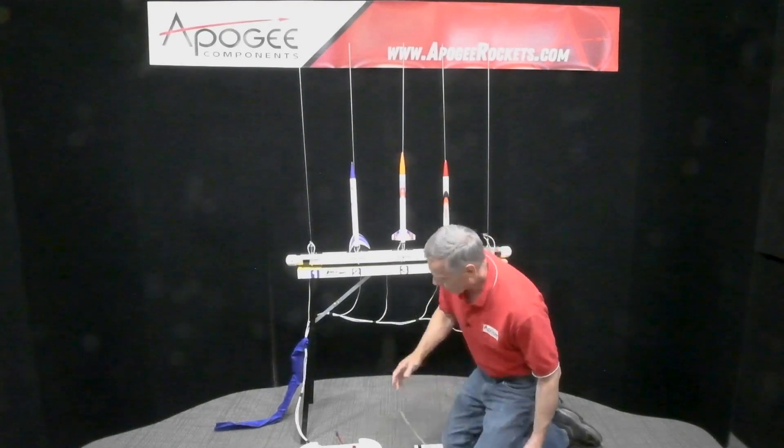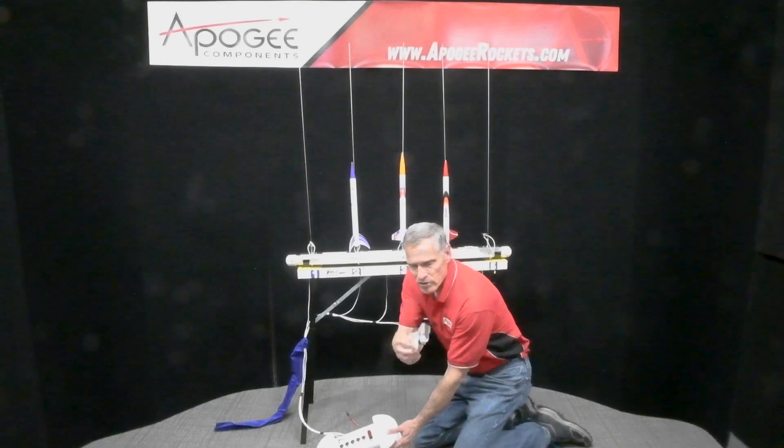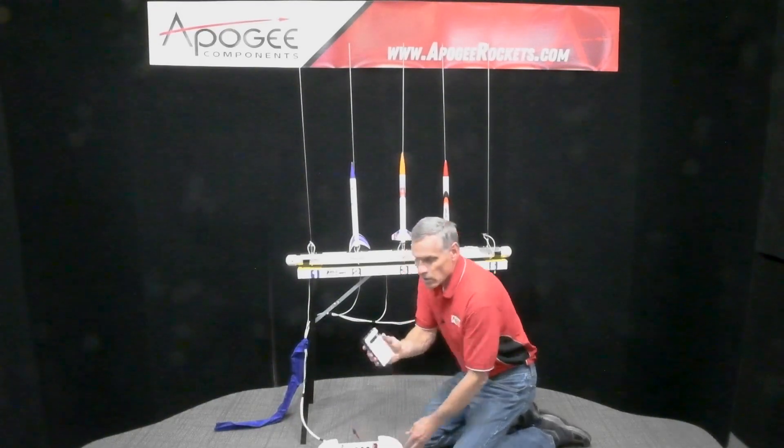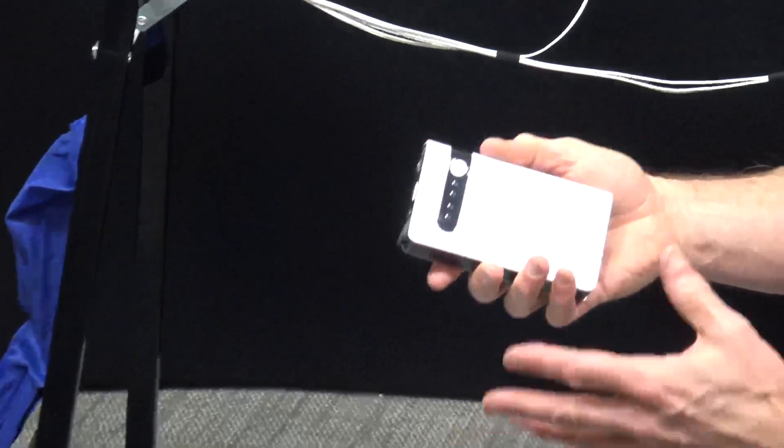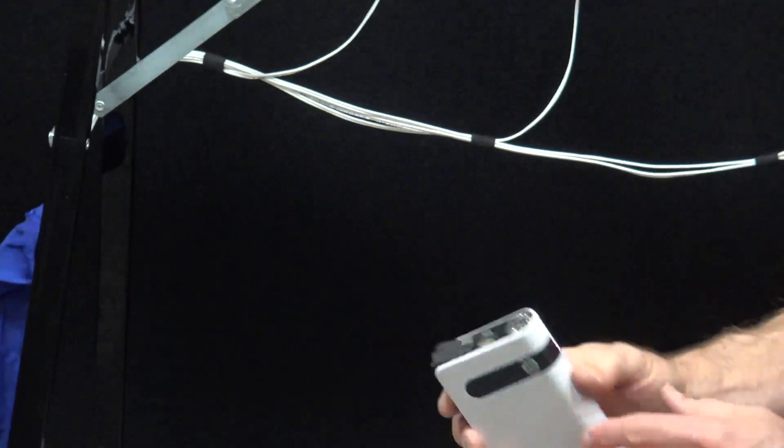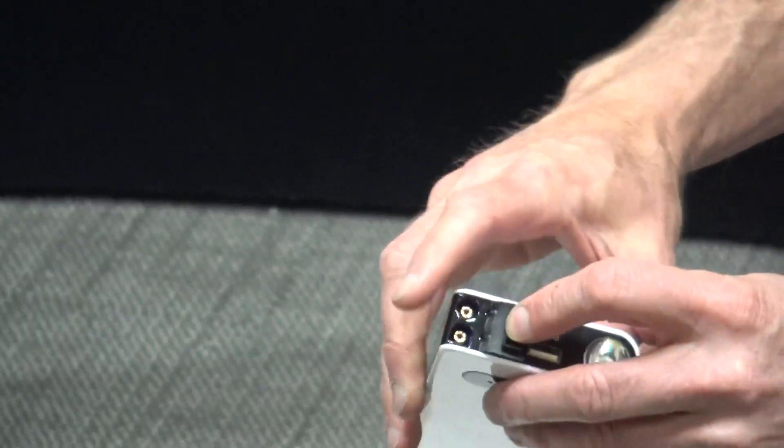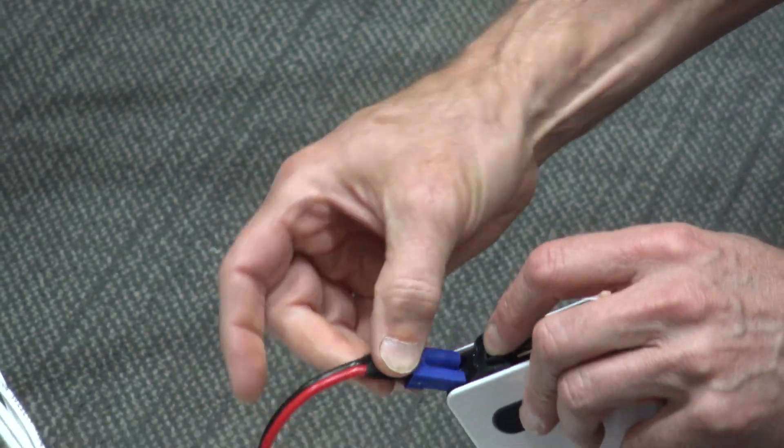The other nice thing about this is the battery comes with it, and this is a 12-volt car starter battery. So if your car breaks down, you could actually use this to start your car, to jumpstart your car. And it has a little connector on the end that will plug right into the wired console down here.